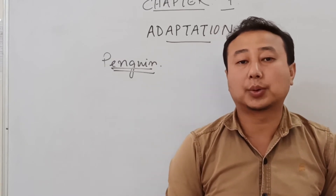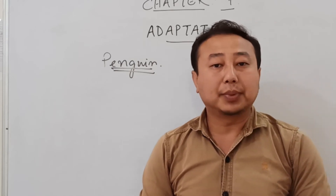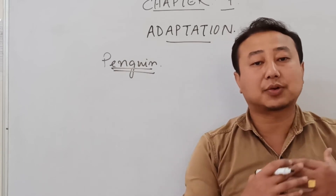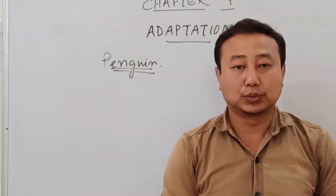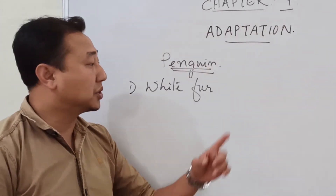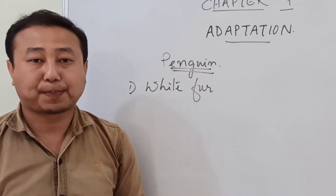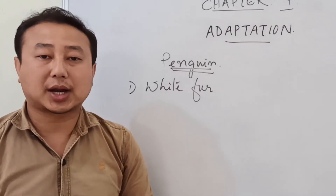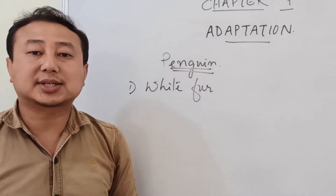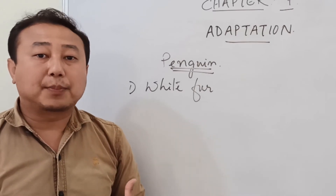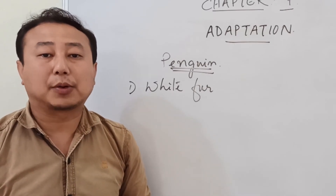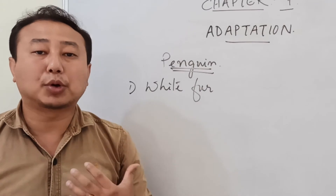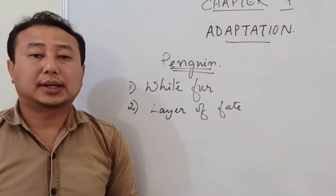The next animal we are going to discuss is the penguin, one of the most common animals found in the polar region. Like the polar bear, the penguin also develops many adaptations to survive in the polar region. The first adaptation is the white fur. The white fur of the penguin merges with the white background of the snow, helping them escape from predators who cannot easily notice them.